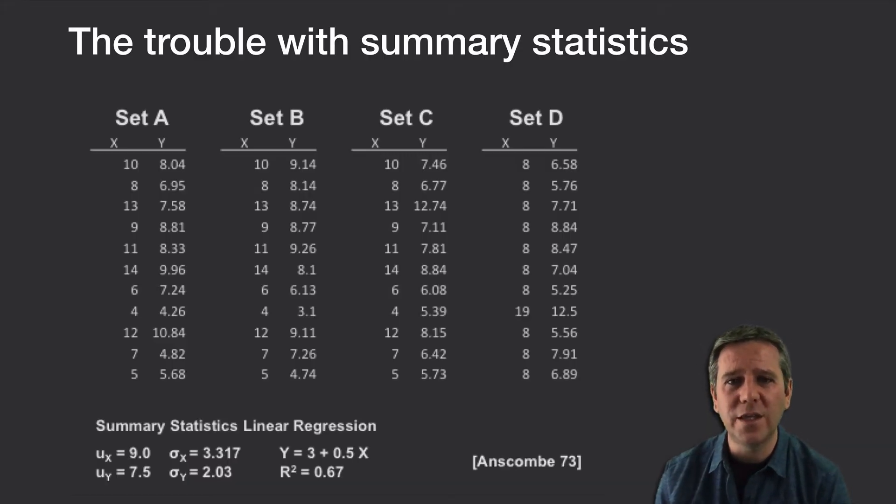So this show me the data issue that we often come back to is very well demonstrated when we have data like this. This is taken from Anscombe's classic 1973 demonstration of the trouble of relying solely on summary statistics and then going off and doing your routine analysis. What we have here is four small data sets from Anscombe and we've calculated some classic summary statistics like the mean, the standard deviation and the R squared from a linear regression fit.